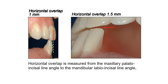The horizontal overlap is measured from the maxillary palatal incisal angle — meaning the 1.5 mm is not from the labial surface but from the palatal side. The horizontal overlap is measured from the maxillary palatal incisal angle to the mandibular labio-incisor line angle, and should be 1 to 1.5 mm.